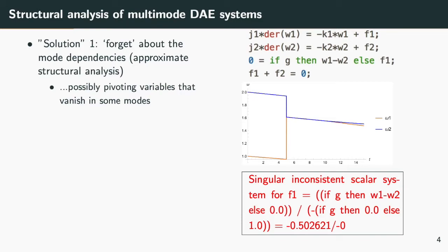For instance, this is a simple clutch model with two modes. It is a perfectly correct Modelica model, and the structural analysis implemented in tools like OpenModelica is successful. However, the generated simulation code is incorrect and produces a division by zero error at the instant of a mode change.